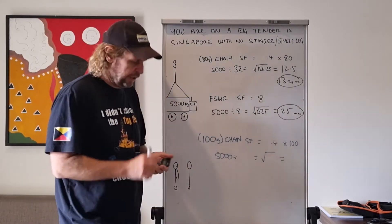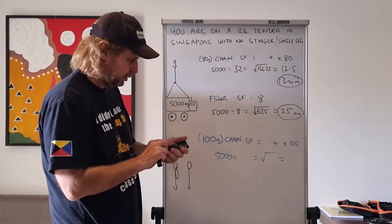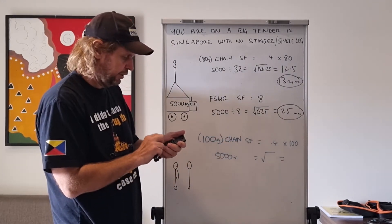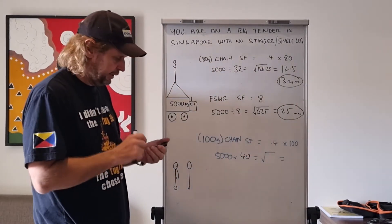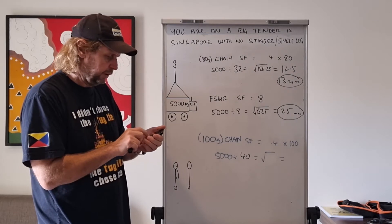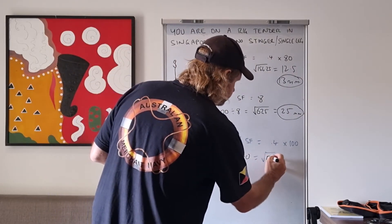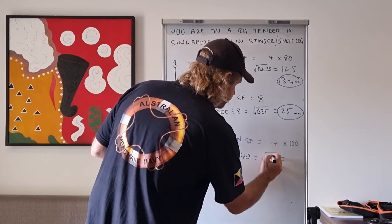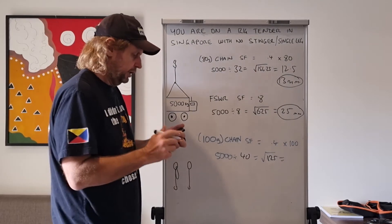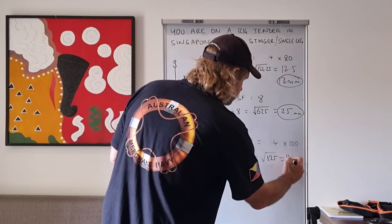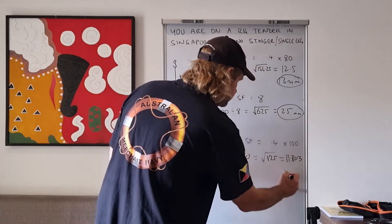So we'll work on 100 grade chain. Safety factor for 100 grade: 0.4 times 100 equals 40. 5,000 divided by 40 equals 125. Square root of 125 equals 11.803, but we're going to round that up to 12 millimeter.